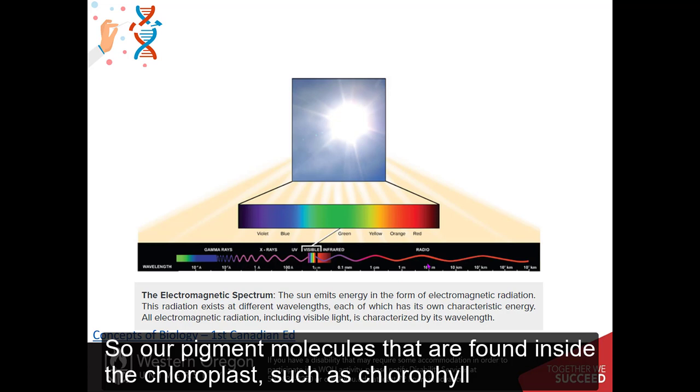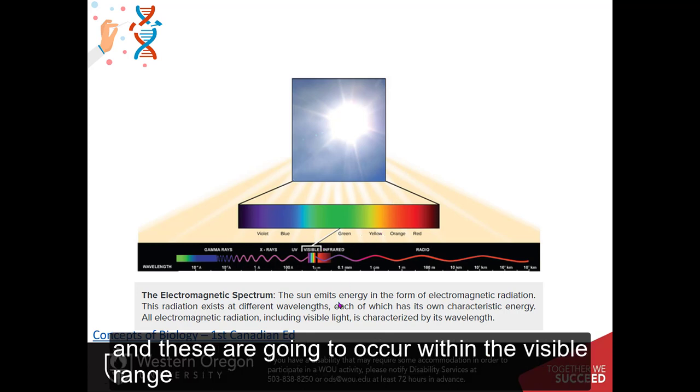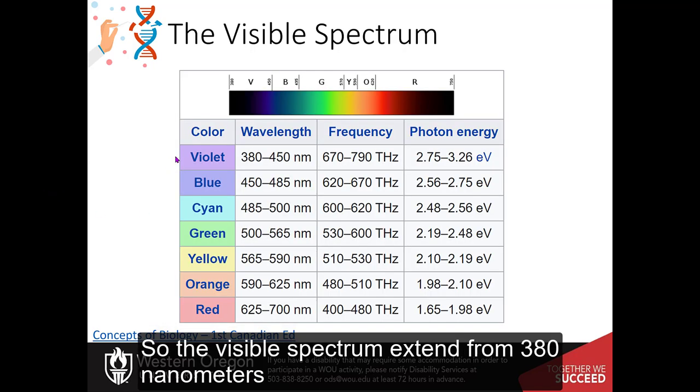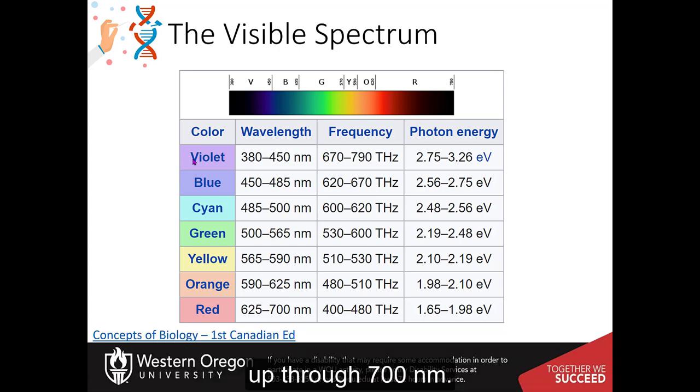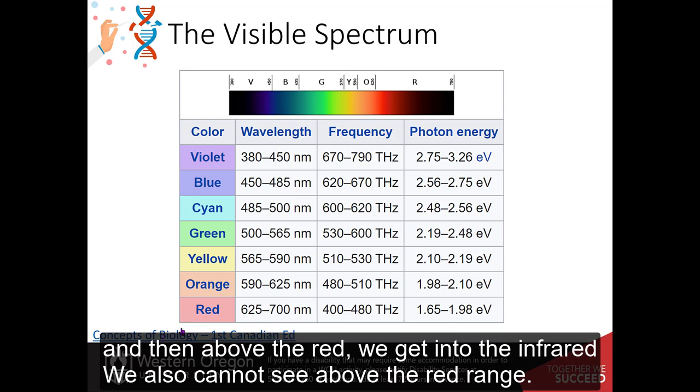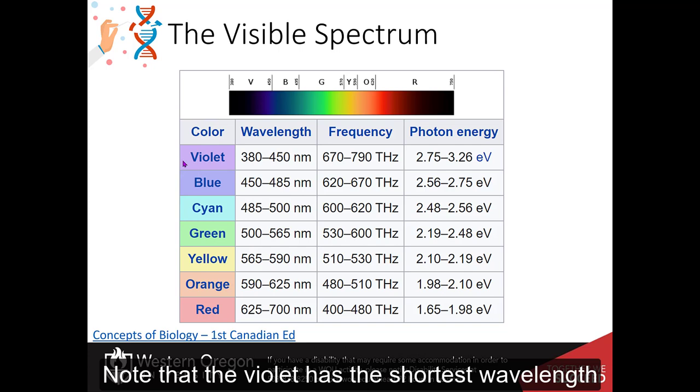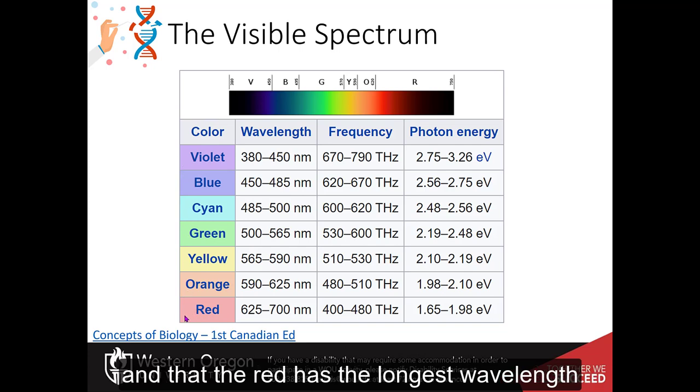So our pigment molecules that are found inside the chloroplast, such as chlorophyll and the carotenoids, can absorb and reflect light within specific regions of the electromagnetic spectrum, and these are going to occur within the visible range. So the visible spectrum extends from 380 nanometers up through 700 nanometers. Lower than this, you get into the ultraviolet, and we can't visibly see that. And then above the red, we get into the infrared. We also cannot see above the red range. So for the biological activity of the chloroplast, the chloroplast is also utilizing light within this visible range. Note that the violet has the shortest wavelength, and that the red has the longest wavelength.